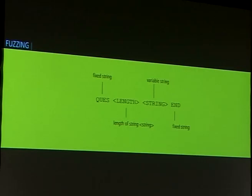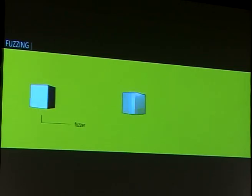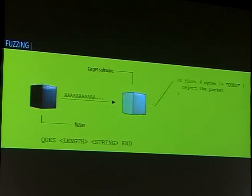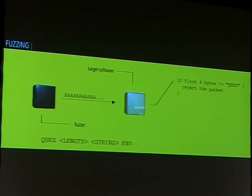Let's see the advantages and drawbacks in practice. A small example: it's a very basic protocol. You have first a fixed string 'ques', then you have a length corresponding to the length of a variable string — this length is on 32 bits big endian — and finally you have a fixed string 'end'. If you want to try to fuzz a server, for example, which uses this protocol, you use a fuzzer and you have the server as a target. If you send random characters, or just 'A's in this case, most of the time you have check functions.